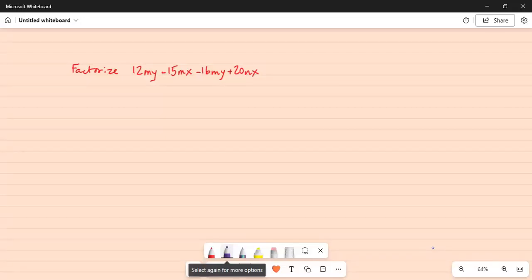It says factorize 12my minus 15mx minus 16my plus 20nx. So we will take two terms at a time.